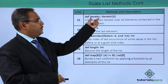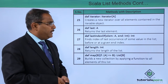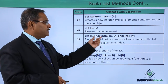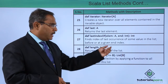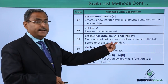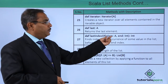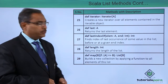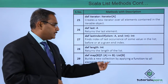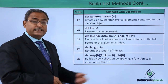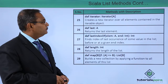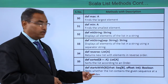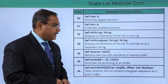The `iterator` method creates a new iterator over all elements contained in the iterable object. `last` returns the last element. `lastIndexOf` finds the index of the last occurrence of a value in the list before or at a given end index — the element is of type Any, the end index is of type Int, and it also returns an Int. `map` builds a new collection by applying a function to all elements of the list. We also have `max`, `min`, `mkString`, and `reverse`, which returns a new list with elements in reverse order.